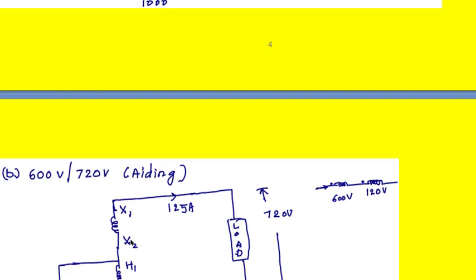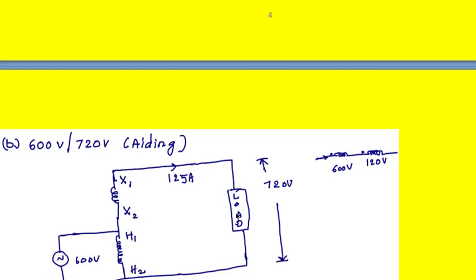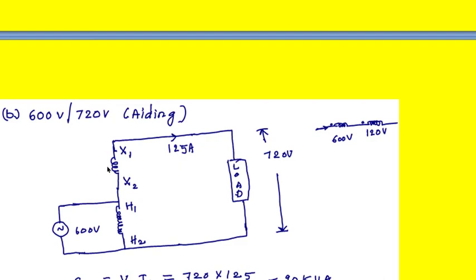The connection is X2 here, making it series aiding. The LV winding current capacity is 125 amperes, and since the LV winding is connected in series with the load, that current flows through the load. The load terminal voltage is 720 volts, so the kVA rating SB = V2 × I2 = 720 × 125 ÷ 1000 = 90 kVA.